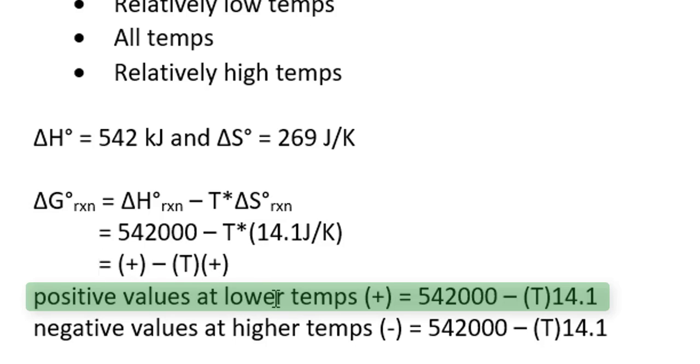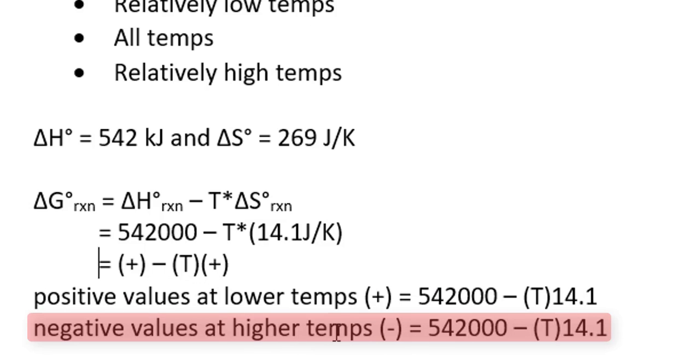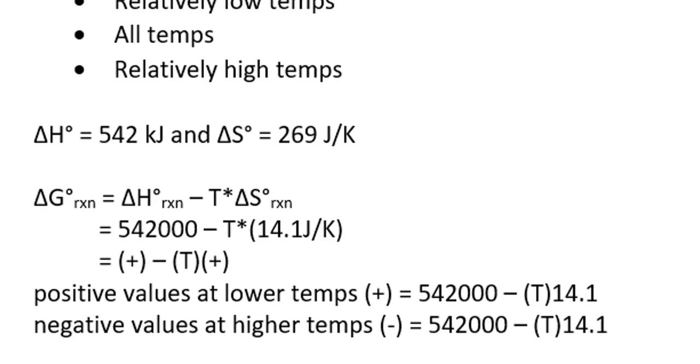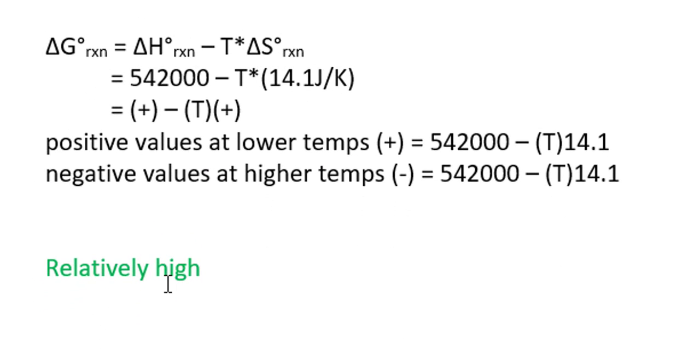So at lower temperatures, the delta G is going to be positive, which is not product favored. And at higher temperatures, the delta G will be negative, which is product favored. So the answer is relatively high temperatures.